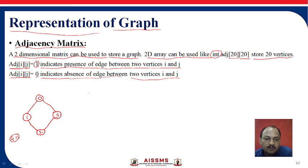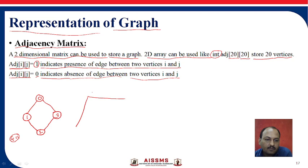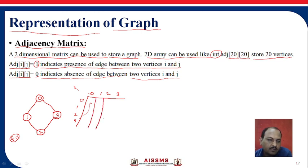First of all, we will try to represent this graph in matrix format. We set up the rows and columns as 0, 1, 2, and 3 on both axes. We will represent all these things into the matrix and see how it works.